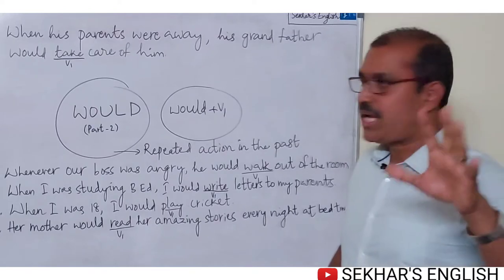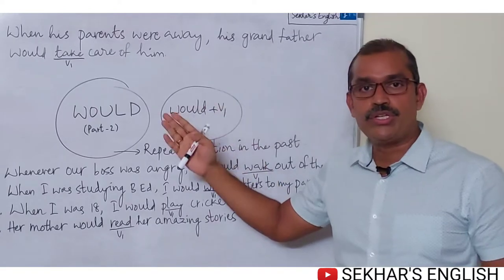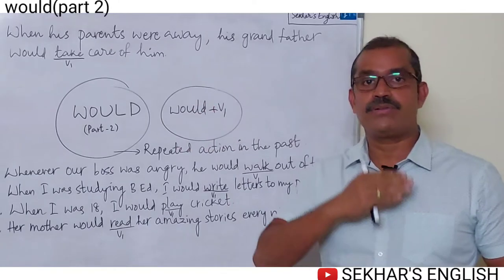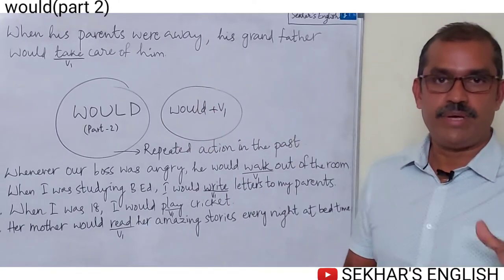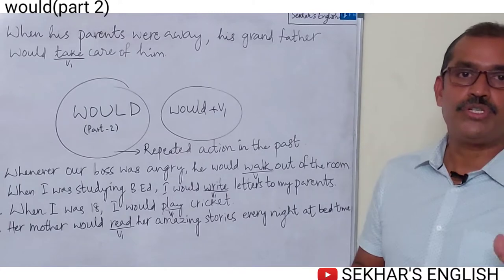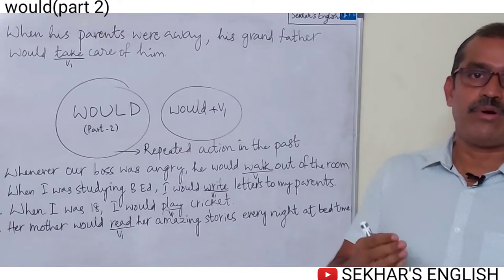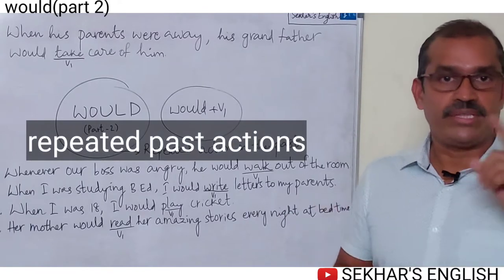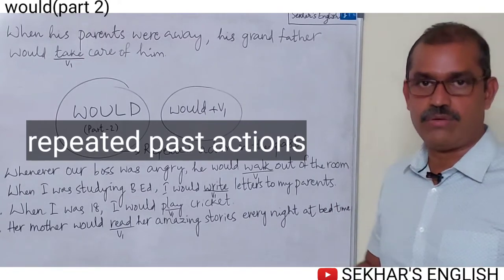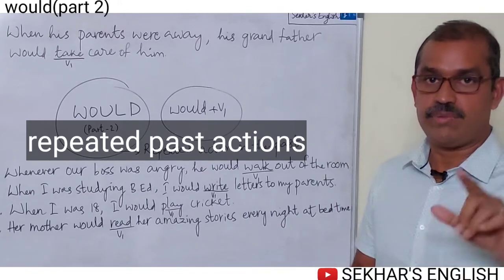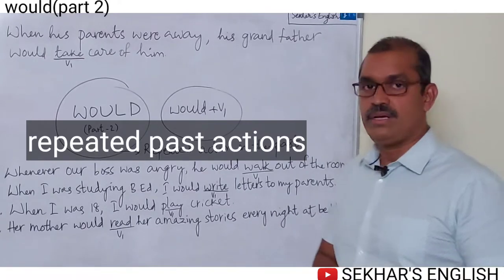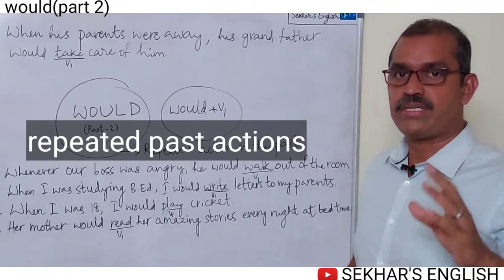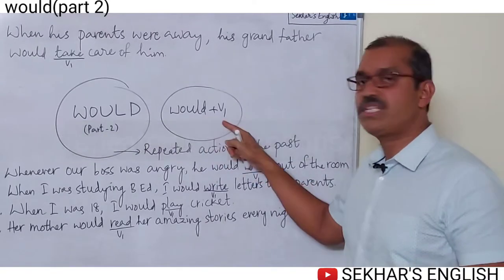Okay friends, sometimes we use 'would' to talk about things that happened regularly in the past. It means we use 'would' to talk about repeated past actions, but not for things that are happening now. Remember this. To express repeated past actions, the structure is 'would' plus V1.